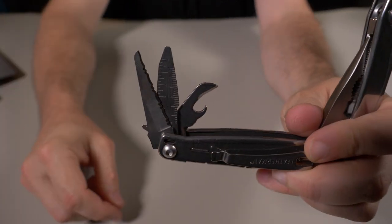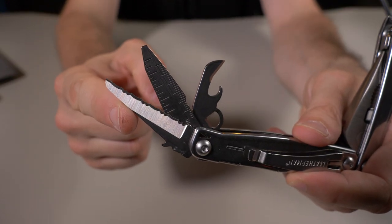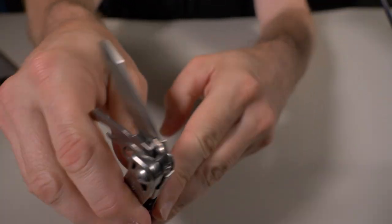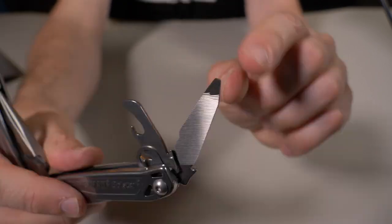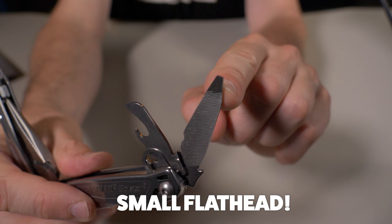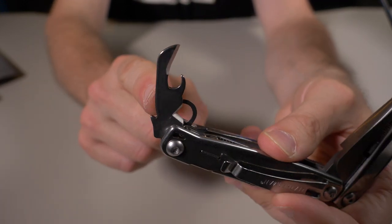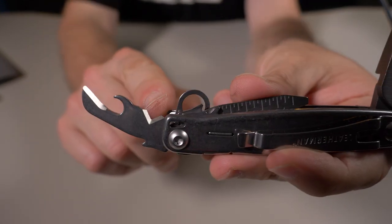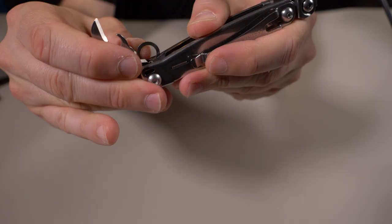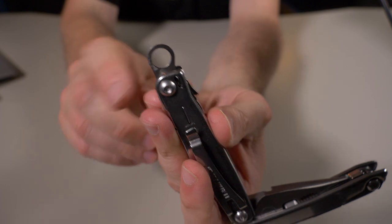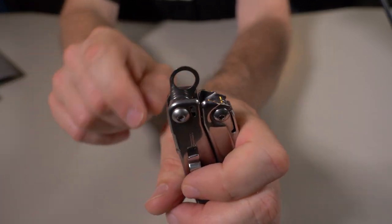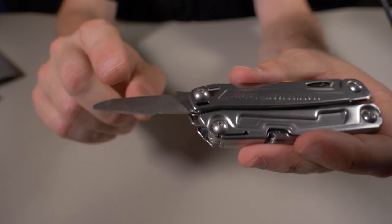On the other side there's tabs to get these tools out. I'm just going to pull all these out at once. That is a 420HC serrated knife. Right next to that is a ruler. Plus on the other side is a wood/metal file. At the end of the file you're going to have a small screwdriver. The next tool is your can opener/bottle opener. Right below that bottle opener you're going to have your wire strippers, and then the last thing right here is the attachment point. That's not really listed as one of their tools.